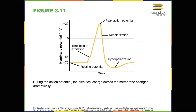Many additional pores open, causing a massive influx of sodium ions and a huge positive spike in the membrane potential — the peak action potential. At the peak of the spike, the sodium gates close and the potassium gates open. As positively charged potassium ions leave, the cell quickly begins repolarization. At first it hyperpolarizes, becoming slightly more negative than the resting potential, and then it levels off, returning to the resting potential.